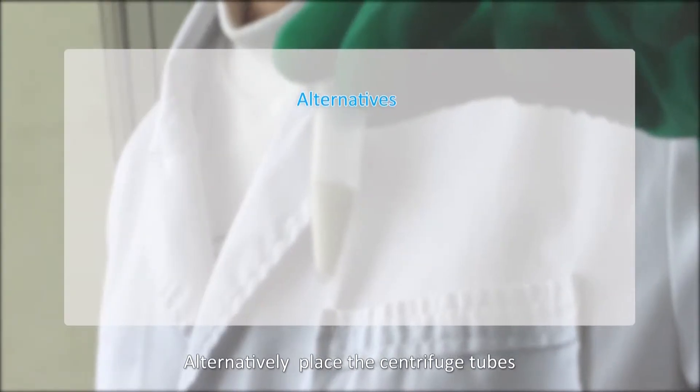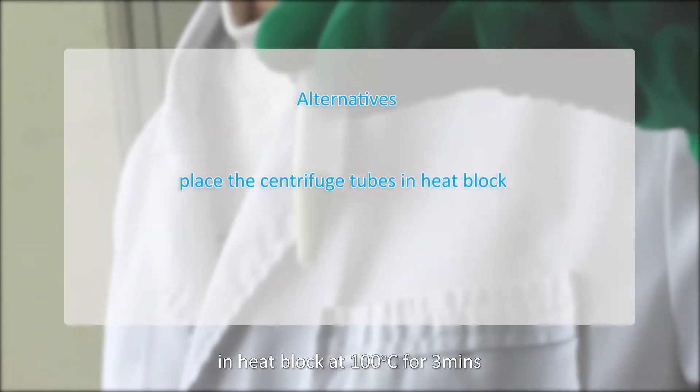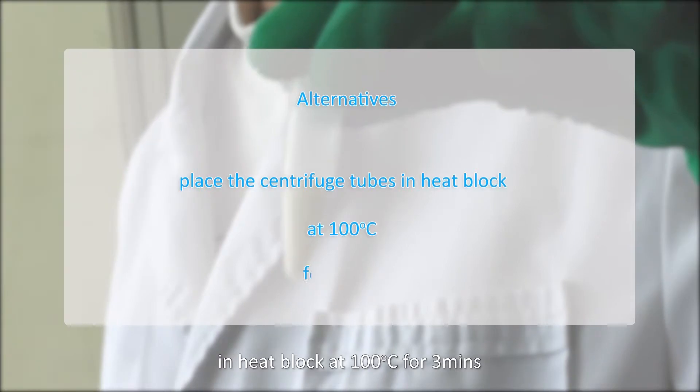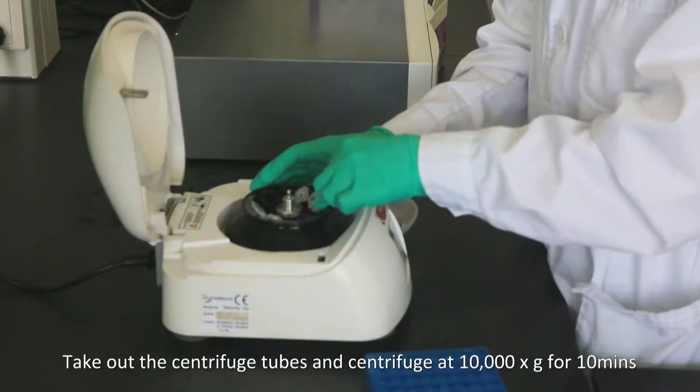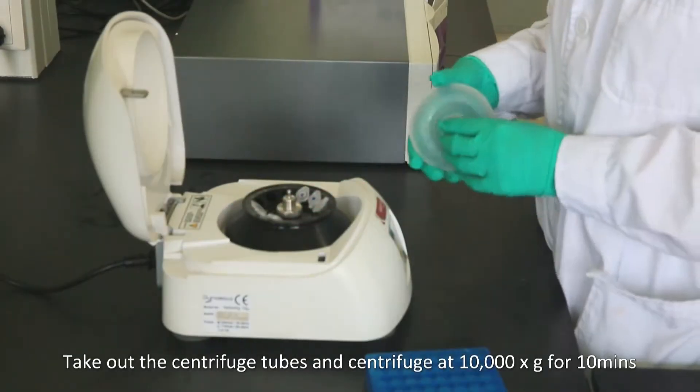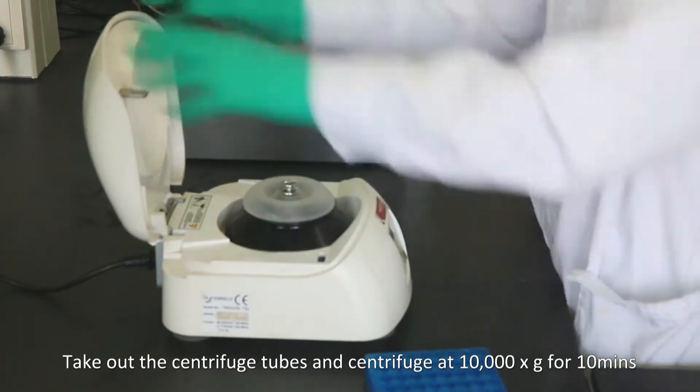Alternatively, place the centrifuge tubes in heat block at 100 Celsius for 3 minutes. Take out the centrifuge tubes and centrifuge at 10,000 g for 10 minutes.